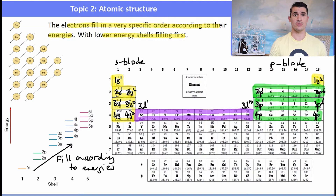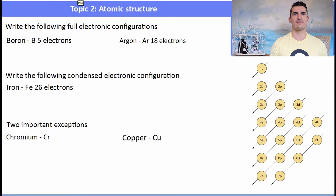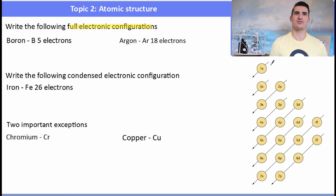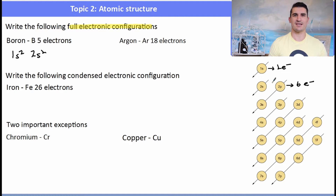Let's practice writing full electronic configurations. Boron has five electrons: we start with 1s², then 2s², and with one electron remaining, we have 2p¹ — giving 1s² 2s² 2p¹. If we count the superscript numbers we get the total number of electrons. Argon has 18 electrons: 1s², 2s², 2p⁶, 3s², and a full 3p⁶, giving 18 electrons total.